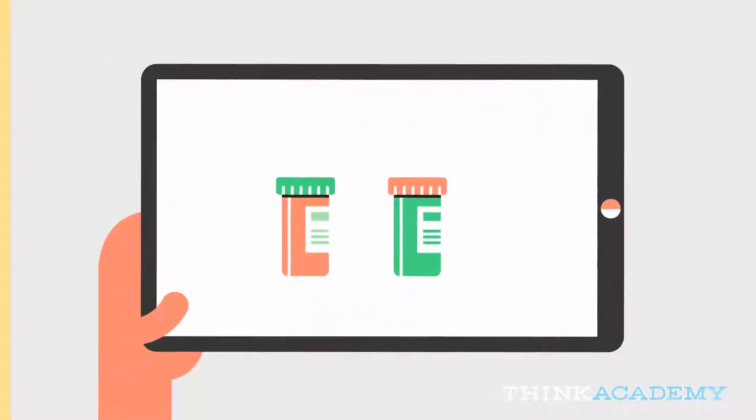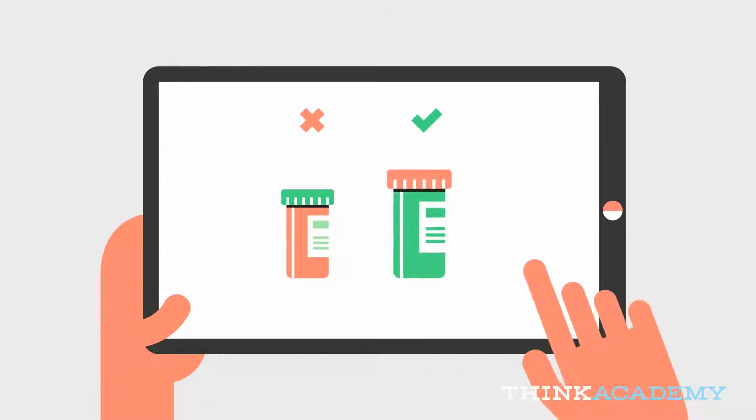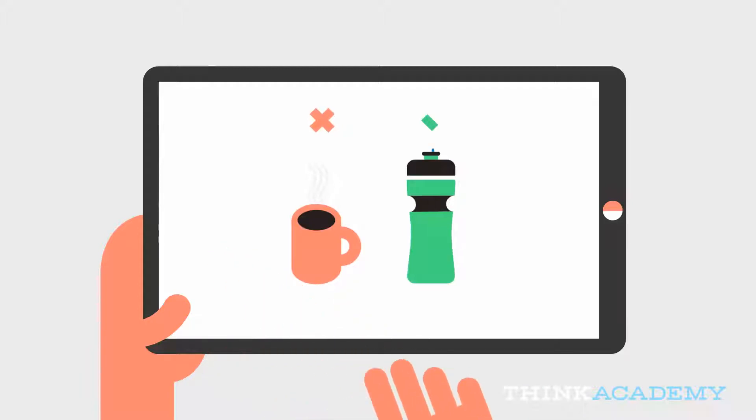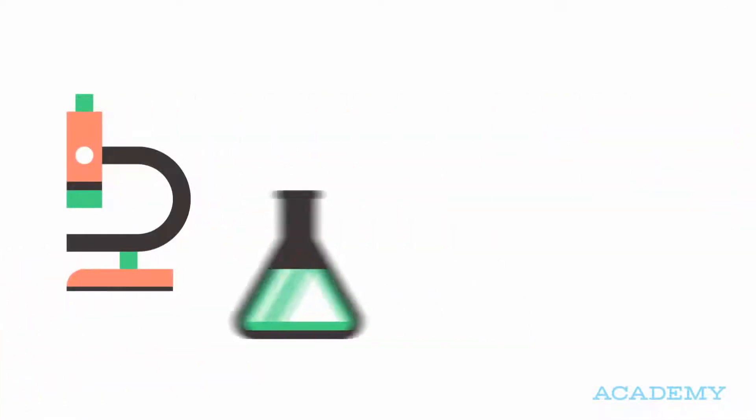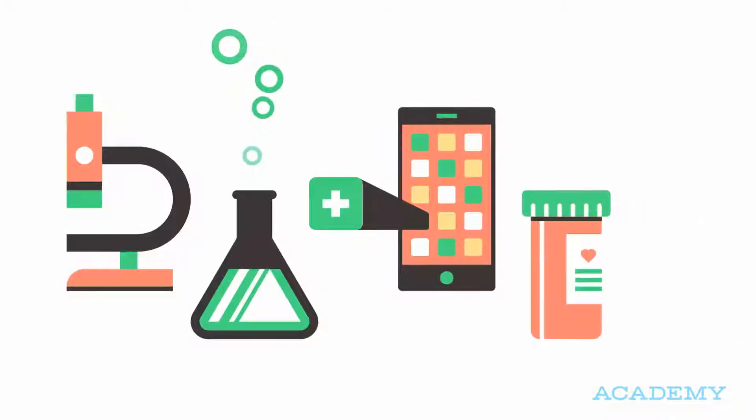The app combines knowledge about Raoul's heart condition with data in the Watson Health Cloud from patients with the same condition. Using analytics and insights, the app makes the best recommendations for Raoul's care. When a new study suggests a correlation between an allergy medication Raoul takes and increased risk of heart disease, the app alerts Raoul's doctor and suggests a possible replacement medication. Since the app knows Raoul's an avid runner, the app suggests a medication that doesn't interfere with strenuous physical activity.